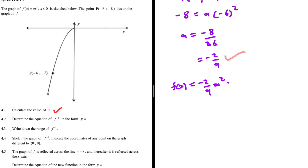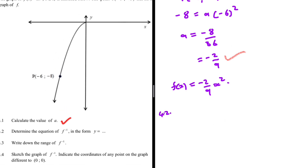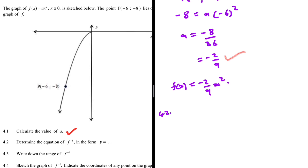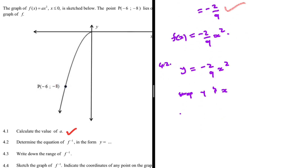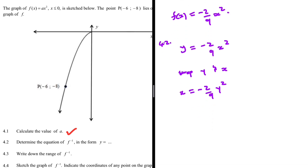Question 4.2: determine the equation of f inverse in the form y equals. We know f(x), that is y, equals minus 2 over 9 times x squared. To find the equation of f inverse, the first step is to swap x and y — in place of y we put x, and in place of x we put y. Then we need to solve for y.